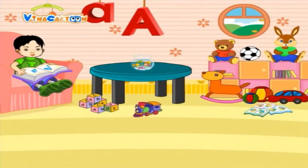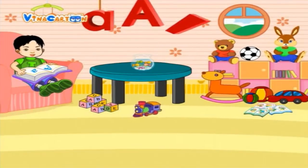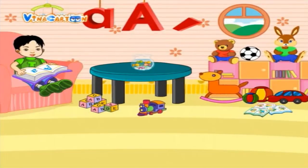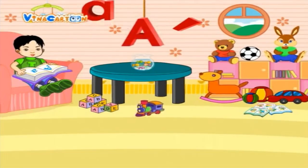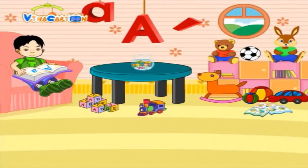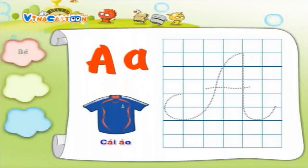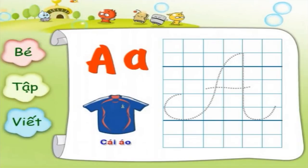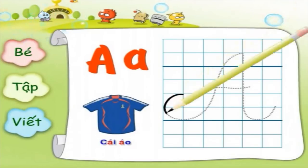Đầu tiên sẽ là chữ A và dấu sắc nè. Các bạn hãy để ý xem, dấu sắc là một đường nằm nguyên về phía bên phải rồi. Các em sẽ được học cách viết chữ A. Các em hãy theo dõi cách viết chữ A hoa như thế nào nhé.